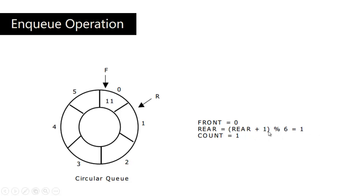How do we do that? We take rear plus 1 and perform the modulus operation with 6, which gives us 1. We do this modulus operation because every time we iterate through the circular Queue — once we fill elements until index 5 — we go back to 0. We divide rear by 6 and get the remainder as the new index position. So this modulus operator gives the remainder after division. Now rear is 1, and count is 1 because we inserted element 11 at the 0th index.